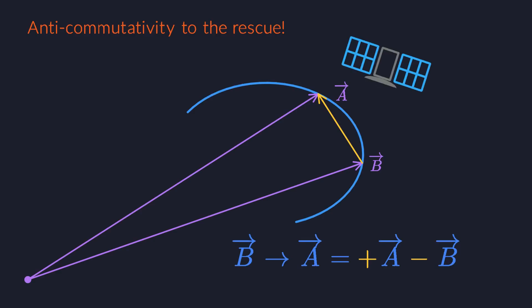So instead of being weird or annoying, anti-commutativity is actually amazing. It manages to make things invariant under changes in their environment. Velocity vectors are invariant to your choice of perspective.